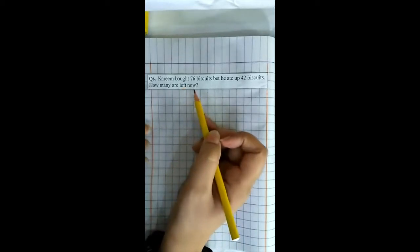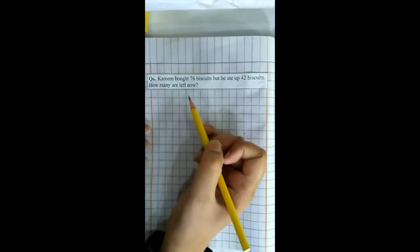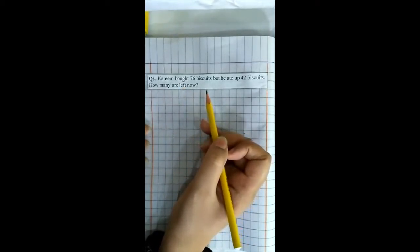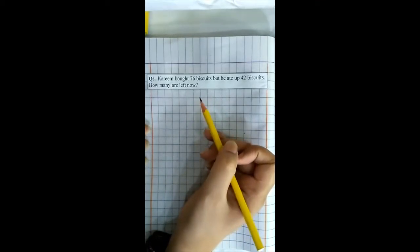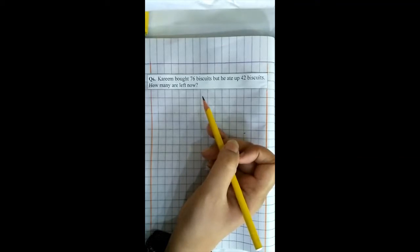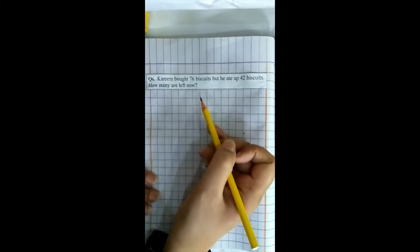اس question کو solve کرنے سے پہلے one class, I will give you example. میں آپ کو ایک مثال دیتی ہوں. If you have four candies, اگر آپ کے پاس four candies ہیں and you ate up two candies اور آپ two candies کھاتے ہیں, so how many candies are left? تو باقی کتنی رہ جائیں گے آپ کے پاس؟ آپ کیا کریں گے اس کو؟ Minus کریں گے یا plus کریں گے?